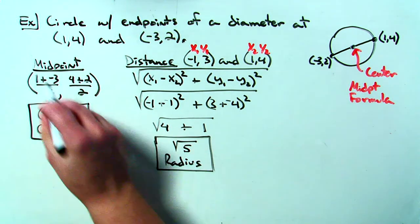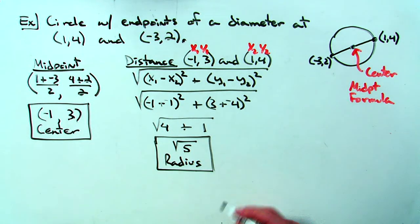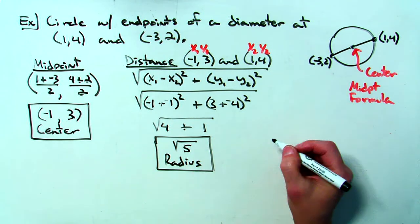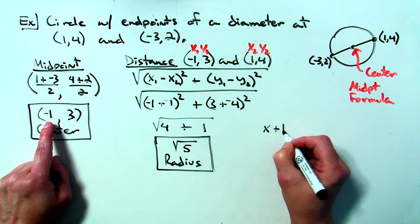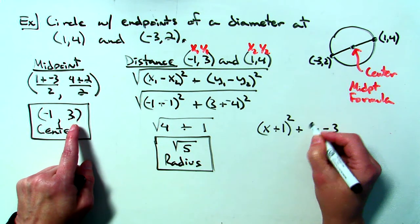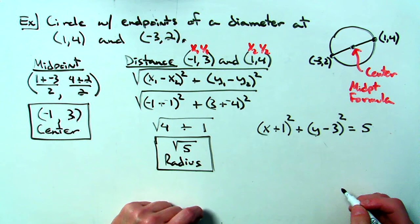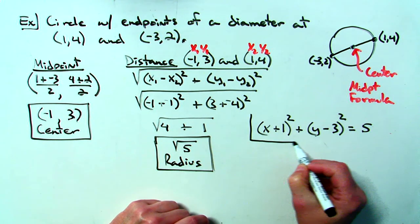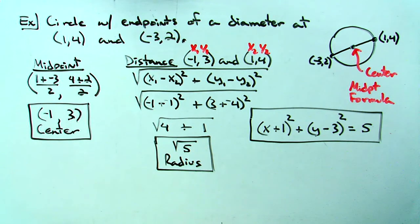Using previous knowledge — the midpoint formula and the distance formula — I have everything I need. The center is (negative 1, 3) and the radius is the square root of 5. I could even write the equation of this circle in standard form: x plus 1, quantity squared, plus y minus 3, quantity squared, equals 5 — since square root of 5 squared is 5. That is the equation of the circle that had original endpoints on the diameter of (1, 4) and (negative 3, 2).